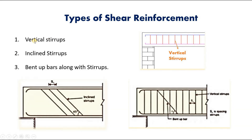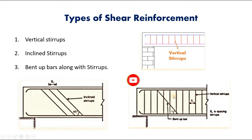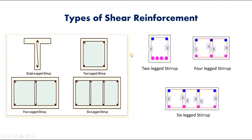Next, we will see the types of shear reinforcement. There are mainly three types that can be provided in beams: in the form of vertical stirrups, inclined stirrups, or bent-up bars along with stirrups. These stirrups can be provided as two-legged, four-legged, or six-legged stirrups based on the requirement — that is, based on the magnitude of shear force to be resisted.